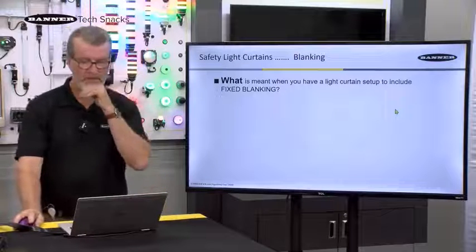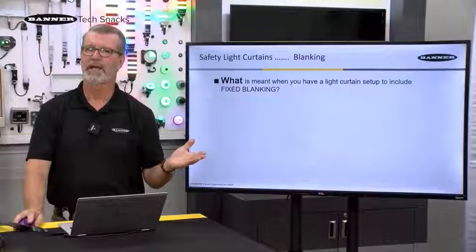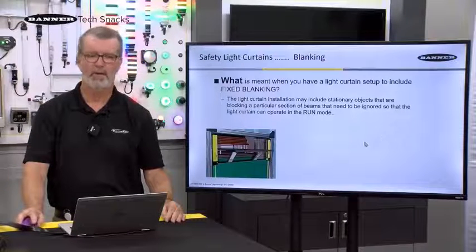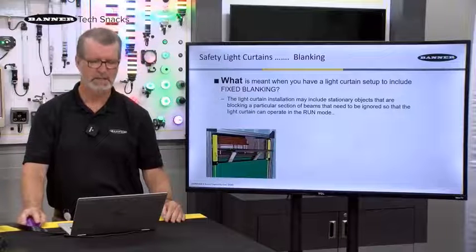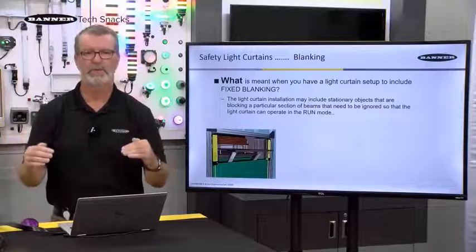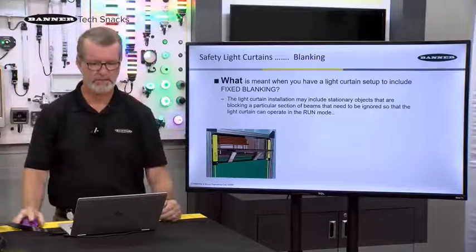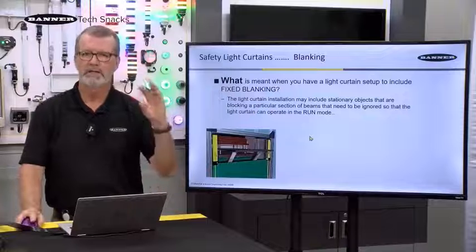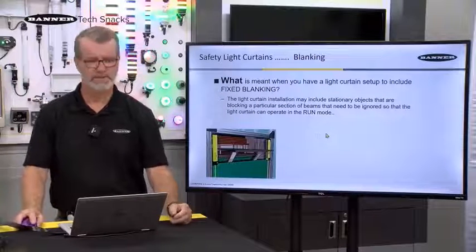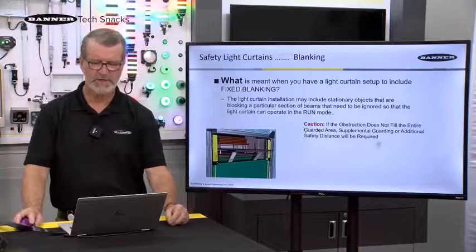What is meant when you have a light curtain set up to include fixed blanking? Fixed blanking applies to a light curtain that's installed where tooling in a press application — like a table — is always in place and will always block some beams. Fixed blanking allows you to still use the light curtain by recognizing that consistent blockage within the curtain, so the system knows those beams are intentionally blocked.